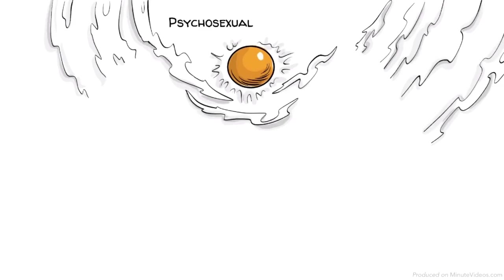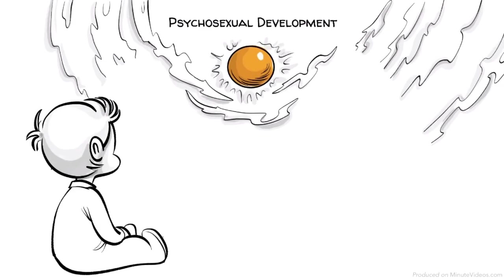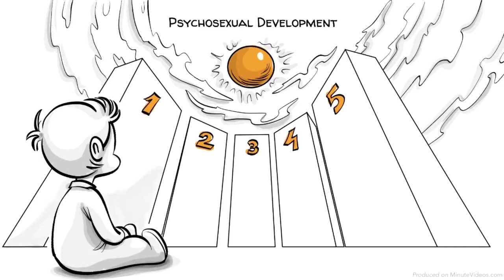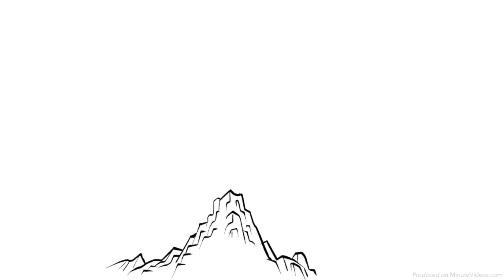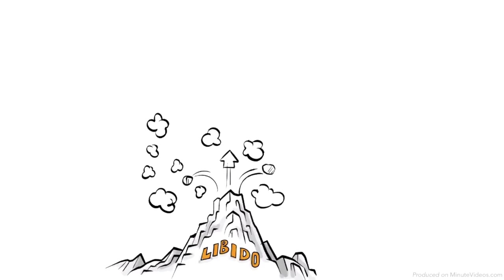Freud's theory of psychosexual development claims that as we grow up we pass through five critical phases. Our sex drive, which Freud called the libido, focuses in a different erogenous zone at each phase.